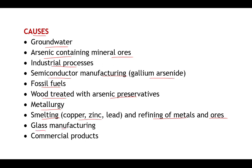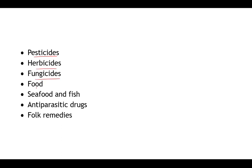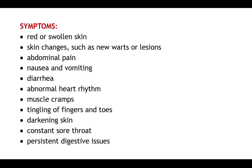Glass manufacturing also utilizes arsenic, and processing in commercial industries may lead to exposure and deleterious effects. Other sources include pesticides, herbicides, fungicides, certain food materials, seafood, and fish — which may get contaminated. Anti-parasitic drugs and certain traditional remedies may also contain arsenic, resulting in arsenic poisoning.